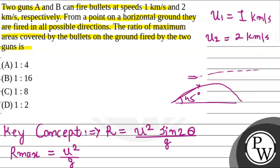This formula is what we'll use. First of all, let's talk about gun A. For gun A, the maximum range covered will be R1 equals u1 squared by g.